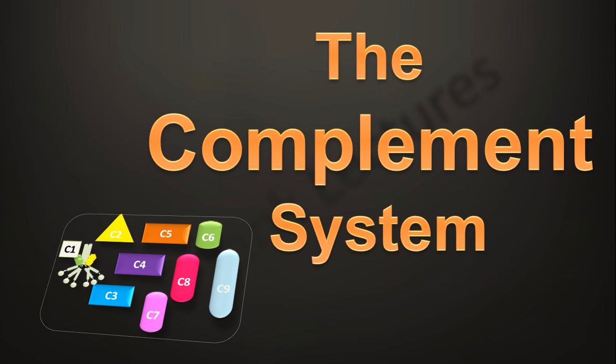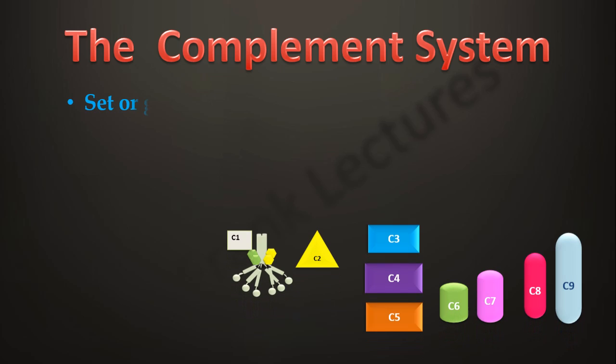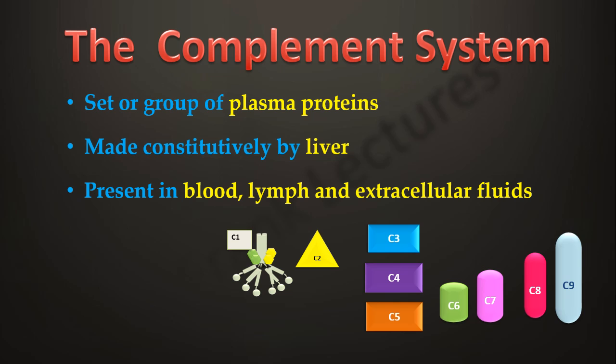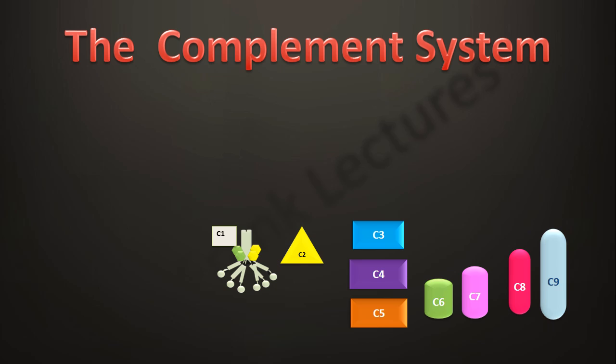The complement system, or just complement, is a set or group of plasma proteins. These proteins are made constitutively by the liver and are present in blood, in lymph, and in extracellular fluids. The complement system is so named because these proteins assist or complement the immune cells in destroying pathogens.